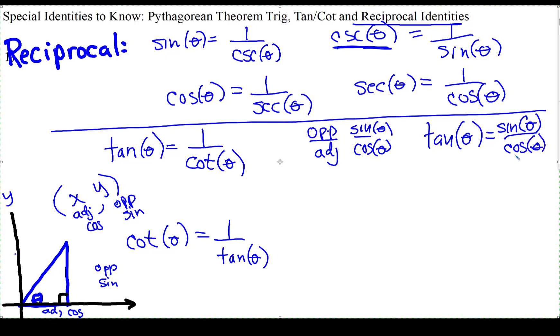Whenever cosine is zero, so at zero and pi, tangent is undefined, so that's where we get the asymptotes. So if tangent is sine over cosine, cotangent will be the reciprocal, cosine over sine.